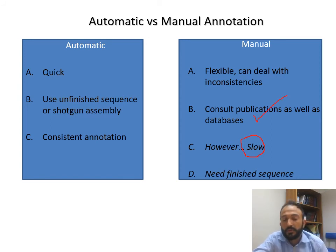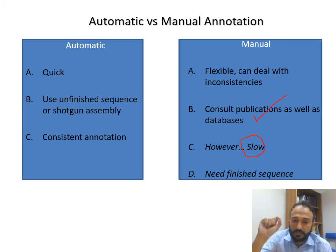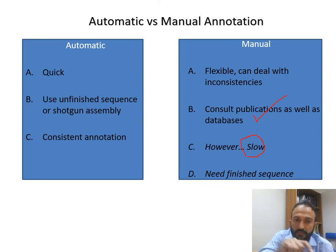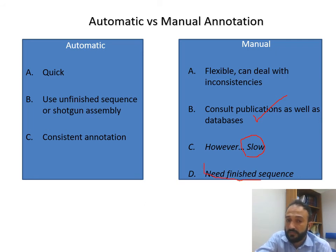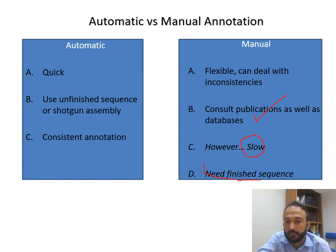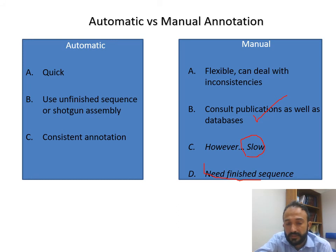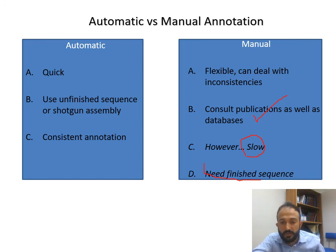For manual annotation, each sequence must have a specific structure, specific function, and belong to a specific species with confidence. For this reason, manual annotation only uses finished sequences. If a sequence is unfinished or has problems, it will not be manually annotated and will be removed from the manually annotated repository — like SwissProt. This is why SwissProt is a gold standard compared to TrEMBL, which is automatically translated DNA information from EMBL.